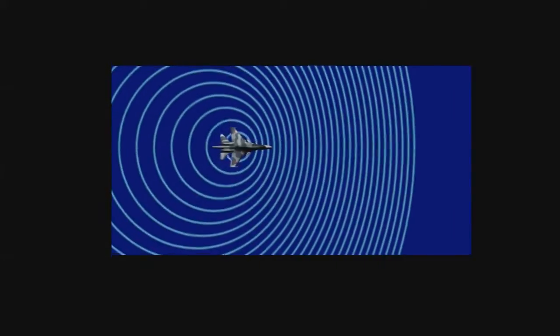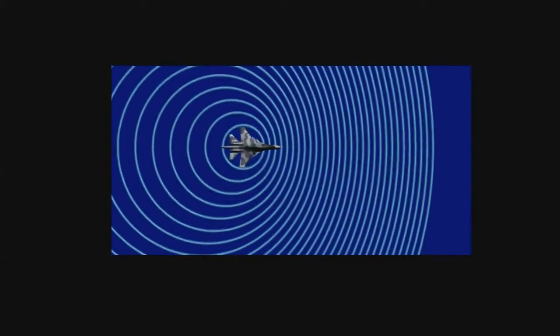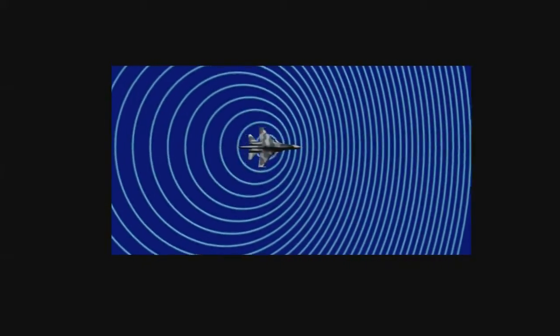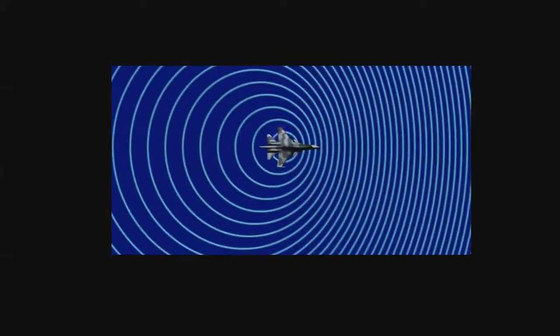Here's an animation of a plane that is moving past us, and as it moves past us we see the sound waves that it emits. It's important to note that the sound waves the plane emits are all emitted at the same frequency, so the number of waves between the plane and the observer remains the same.